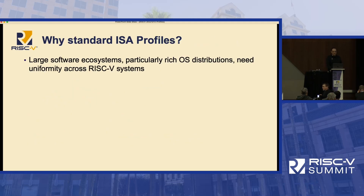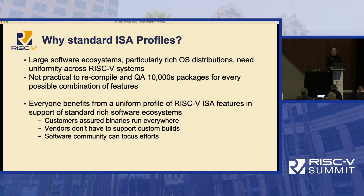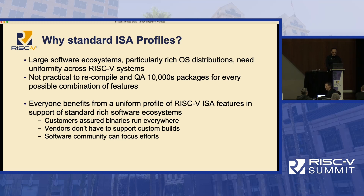Why are we developing these standard ISA profiles? If you have a large software ecosystem like distributions for a rich operating system, you really need uniformity across RISC-V systems. It's not practical to recompile and QA tens of thousands of packages for different platforms. Everybody's going to benefit from having this uniform profile of RISC-V ISA features. Customers benefit because binaries can run everywhere. Vendors don't have to support their own custom builds — they can just use builds from elsewhere. And the software community can really focus their efforts on these standard feature combinations.